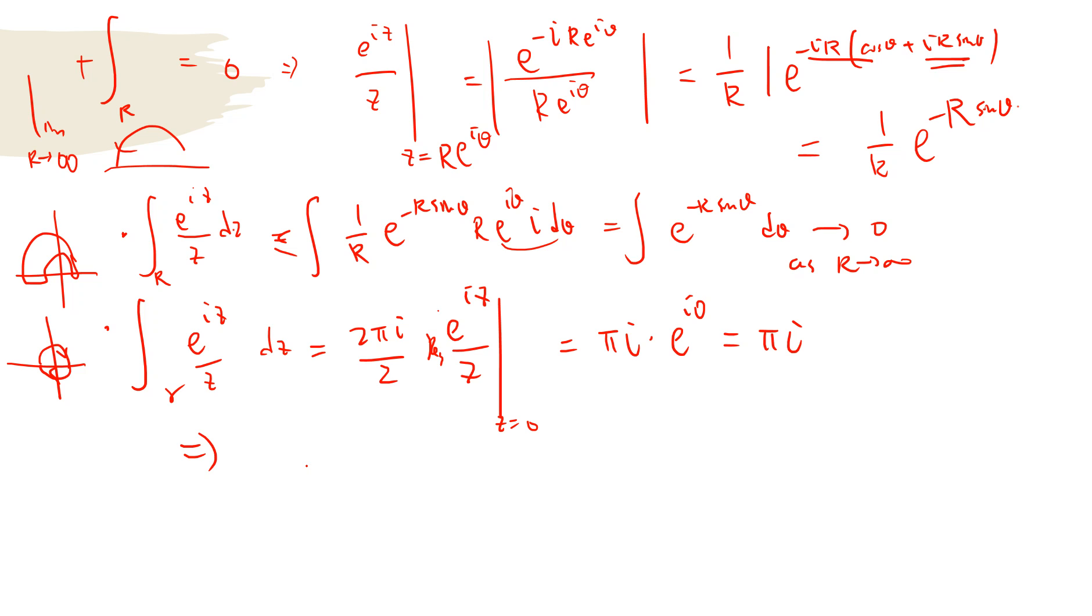So finally our result tells us that the integral from 0 to infinity of sine z divided by z dz equals, from 2i, pi i divided by 2i. So the result is just pi over 2.